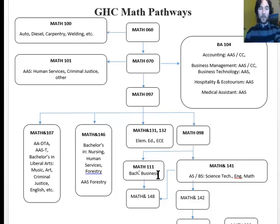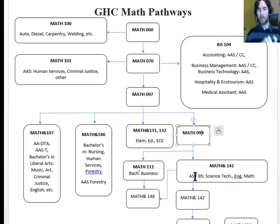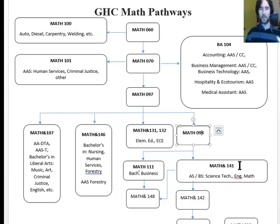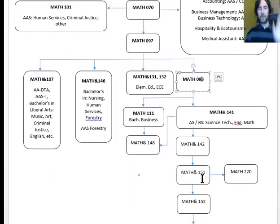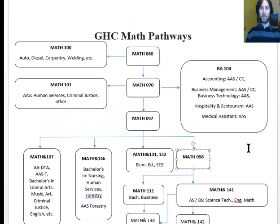If you're getting the Associate of Business Direct Transfer, you would need Math 111 and Math 148, and their prerequisite is Math 98, which is Intermediate Algebra, similar to Algebra 2. If you're getting an Associate of Science or a Bachelor of Science in Science, Technology, Engineering, or Math, you might need the Calculus sequence. Math 141 is Pre-Calculus 1, then Pre-Calculus 2, Calculus 1, Calculus 2, Linear Algebra, and all sorts of other topics.